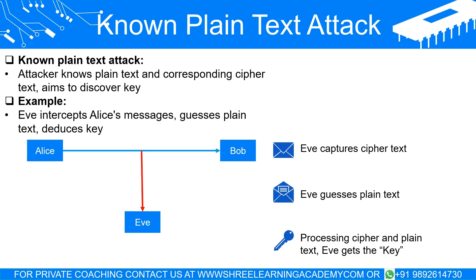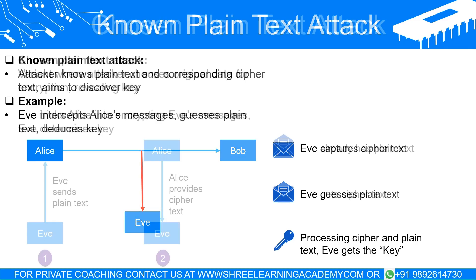For example, let's imagine Alice is sending encrypted messages to Bob. Eve, the eavesdropper, manages to intercept a couple of these messages and has some good guesses about what they say. If Eve can correctly match some plain text to the corresponding cipher text, she can begin to deduce parts of the key. This process is greatly simplified if Alice and Bob are reusing keys or choosing keys in a predictable way. Once Eve discovers the key, she can read all the messages that Alice sends to Bob using that key.